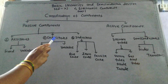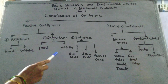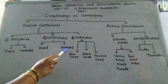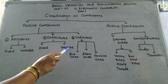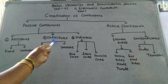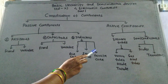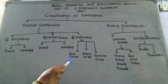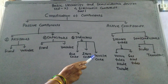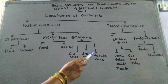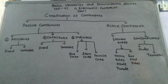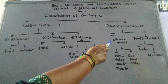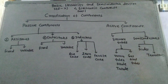In resistors, there are two types: fixed and variable resistors. In capacitors, there are also two types: fixed and variable capacitors. In inductors, there are three types: air core, iron core, and ferrite core inductors.